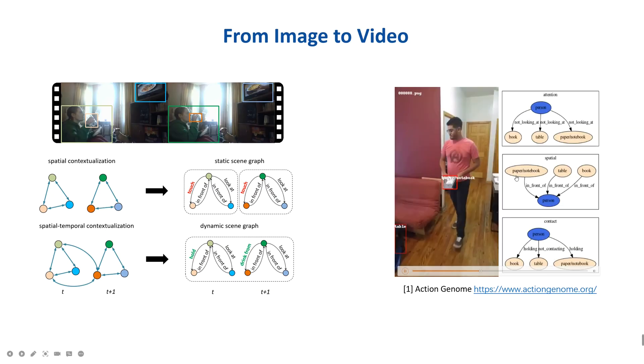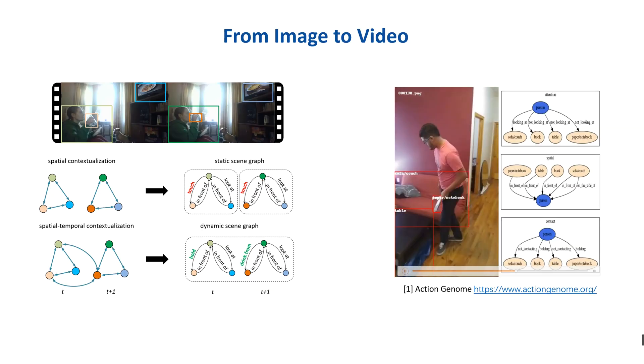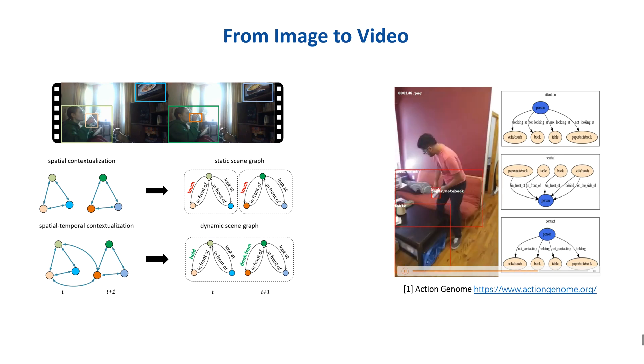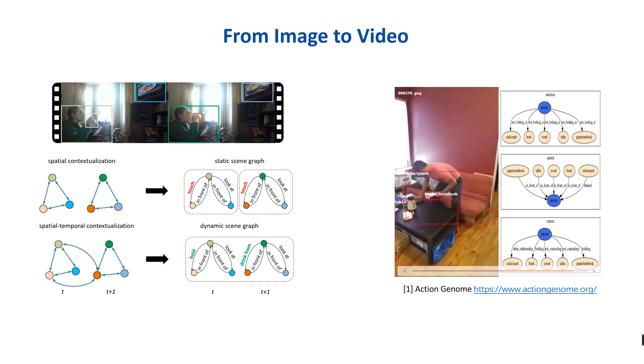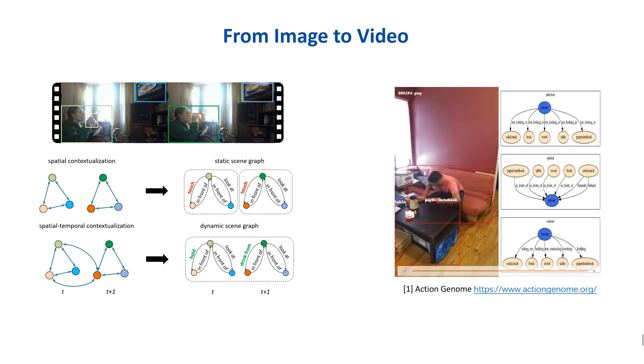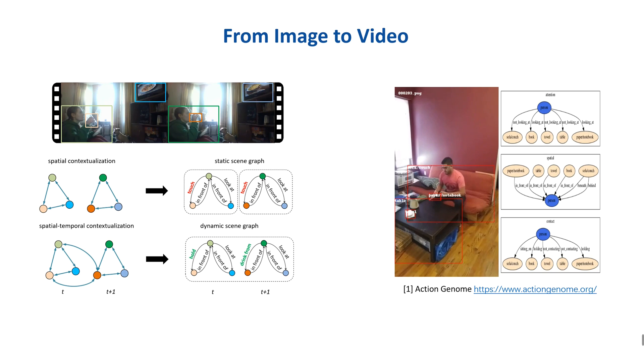Our work extends scene graph generation from images to videos, so-called dynamic scene graph generation. A lot of image-based works predict relationships more accurately by using local spatial context. However, they are not able to understand and utilize temporal dependencies.